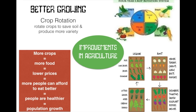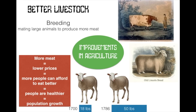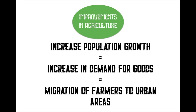We also become better at raising livestock. Previously, livestock was raised mainly to do work on farms, not to eat. By selectively breeding animals, we produce larger, fatter animals that yield more meat and more wool. More meat equals lower prices, more people can afford to eat better, increased protein makes people healthier, and that again results in population growth.